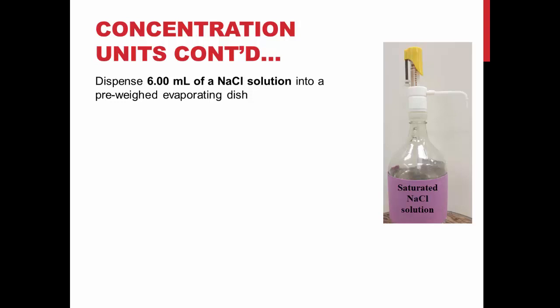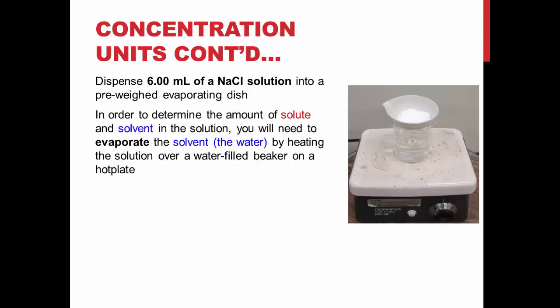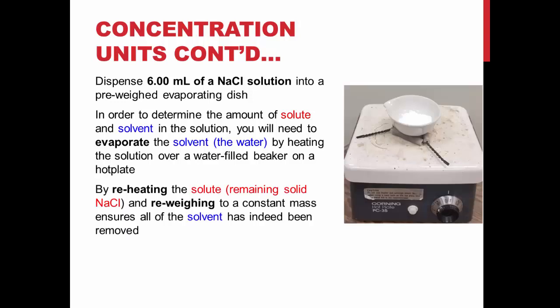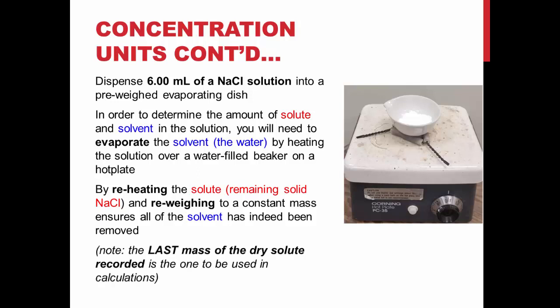First, you will dispense 6 milliliters of sodium chloride solution into a pre-weighed evaporating dish. In order to determine the amount of solute and solvent in the solution, you will need to evaporate the solvent, water, by heating the solution over a water-filled beaker on a hot plate. You will then reheat, just like the picture shows, and re-weigh the solute to a constant mass to ensure that all of the solvent has been removed. Note: the last mass of the dry solute recorded is the one you will use in calculations.